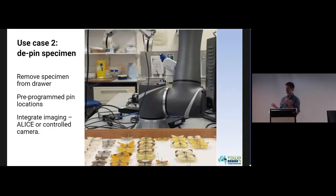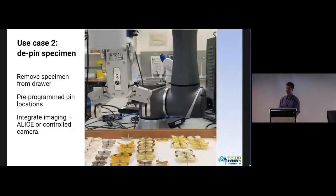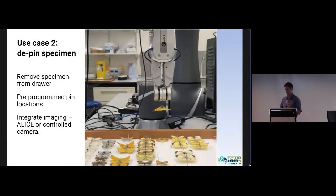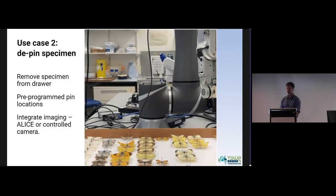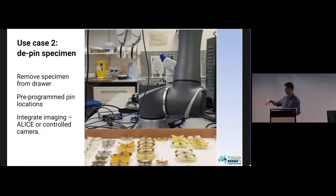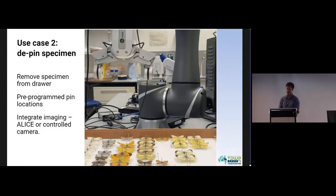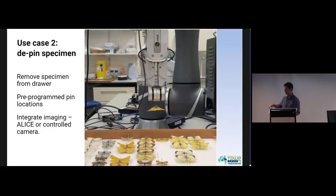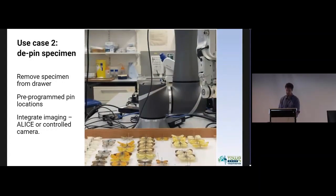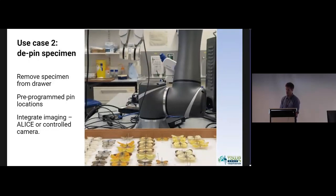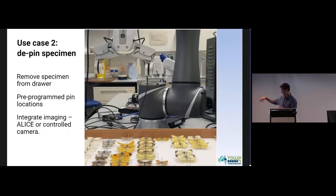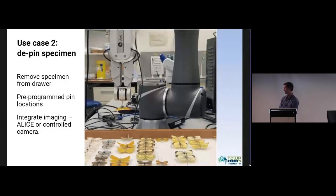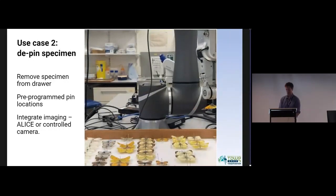We might implement this as a cobot, so working alongside the digitizers to place the item into the Alice software that you saw before, or we combine it with the first use case, so you remove the specimen from the drawer, move it to a staging area, and then image all around with a camera mounted on a robot arm. In this example, it's using pre-programmed pin locations. It does look quite scary having this sort of big gripper coming down near these delicate specimens. And it does have force detection built in, but that force detection is not going to be enough to stop you crushing one of those.